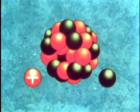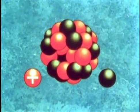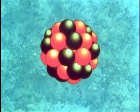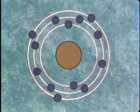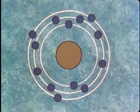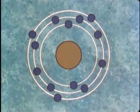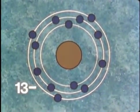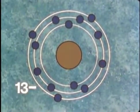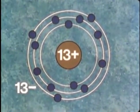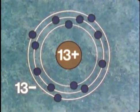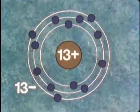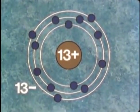Protons and neutrons are of about equal size, and they're both a good deal bigger than electrons. In the nucleus, there's the same number of protons as there are electrons in orbit around it. For example, this is the atom of the metal aluminum, and it has 13 electrons orbiting around it, so there are 13 protons in the aluminum nucleus. This means that the negative charges of the electrons are exactly equal to the positive charges in the nucleus, and the whole atom is therefore electrically neutral.